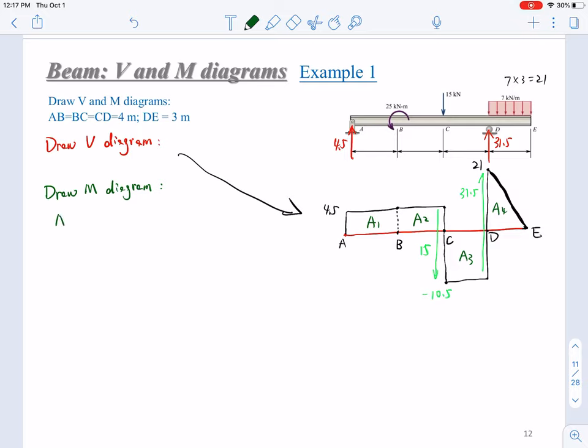What is A1? A1 would be 4.5 times 4, I think it's the length that has been given, it's 4, 4, 4, 3. So it would be 18 kilonewton meter. And A2 would be the same, 18 kilonewton meter.